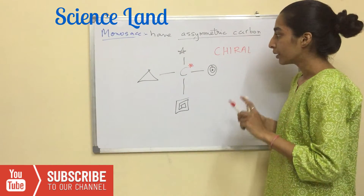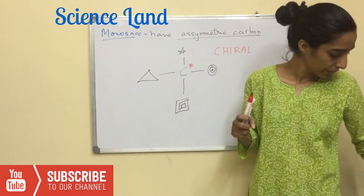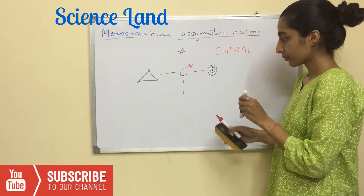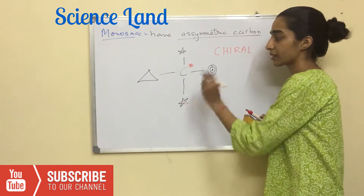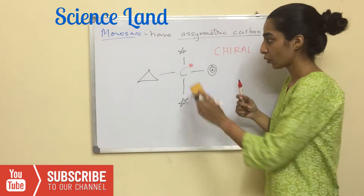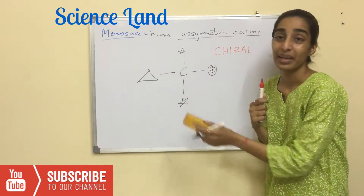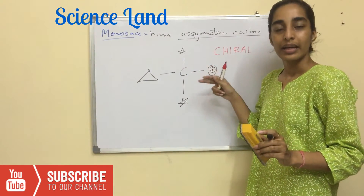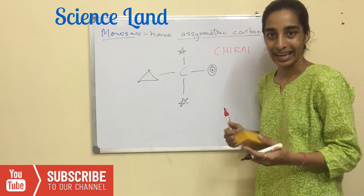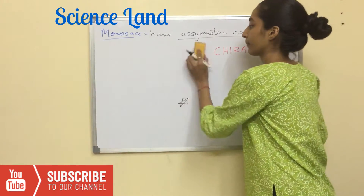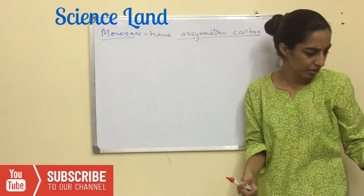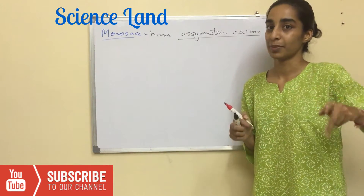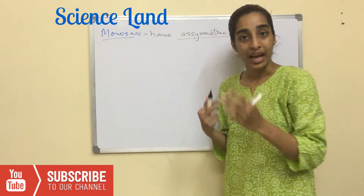This asymmetric carbon is also known as a chiral carbon atom. Having an asymmetric carbon is known as chirality. So monosaccharides have asymmetric carbon — let me give you an example with respect to a monosaccharide.